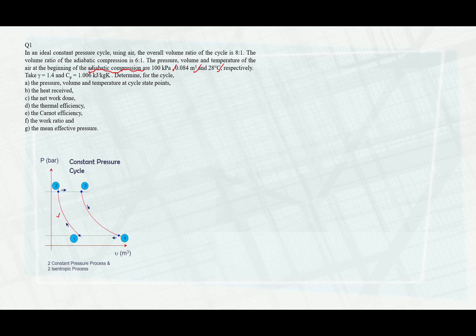The pressure is 100 kPa. The absolute volume — you can see the volume I put here is in metre cubed — so that is 0.084 metre cubed. And the temperature is 28 degrees Celsius. So on the TS diagram, at point 0.1, this temperature should be 28 plus 273. The question also gives us gamma as 1.4 and CP as 1.006.